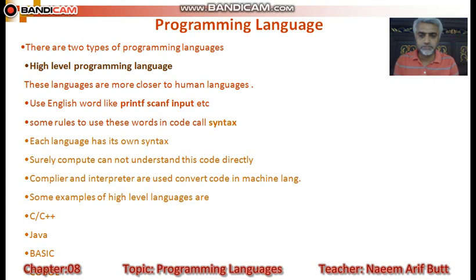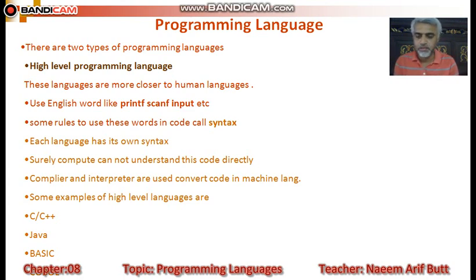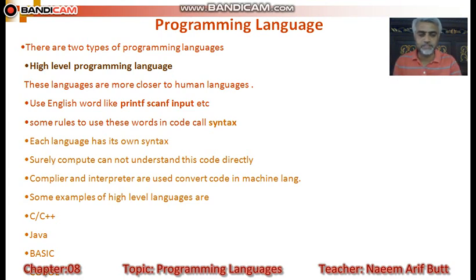کچھ high-level languages کے نام میں نے لکھے ہیں جن کو آپ use کرتے ہیں — جیسے C ہے، اس کا ایک version C++ ہے، Java ہے، BASIC ہے، COBOL ہے۔ یہ ساری languages high-level languages کے اندر آتی ہیں۔ اب ہم next slide کے اندر ان کے code examples بھی دیکھیں گے۔